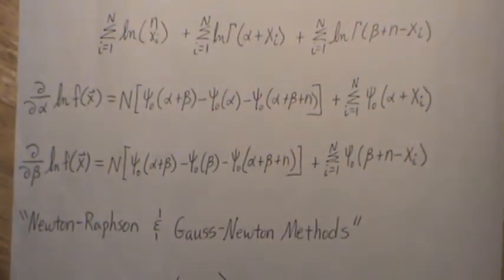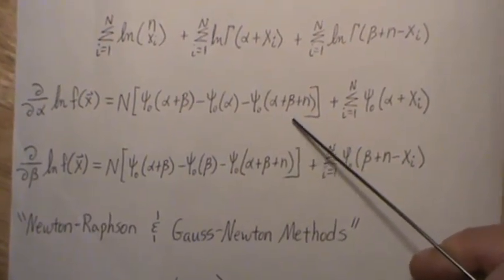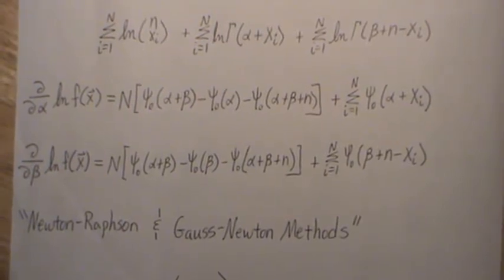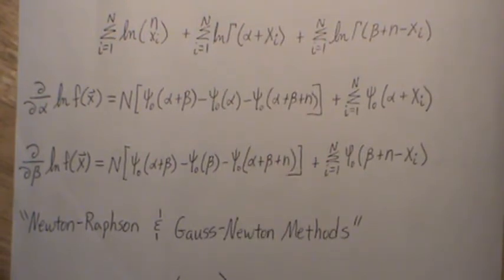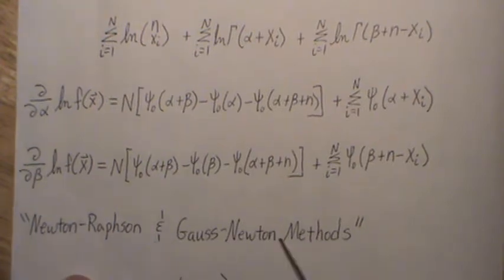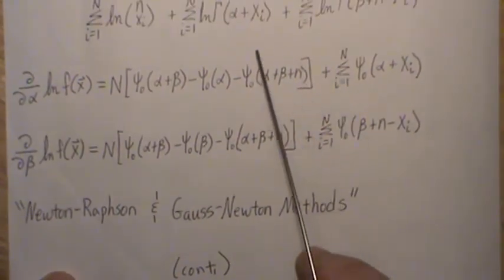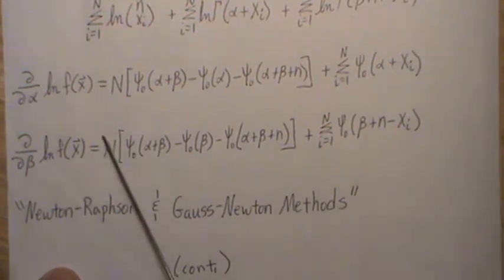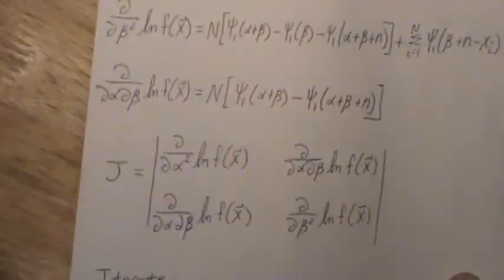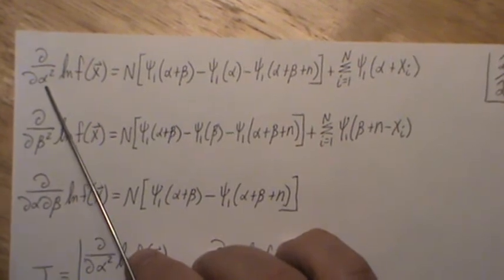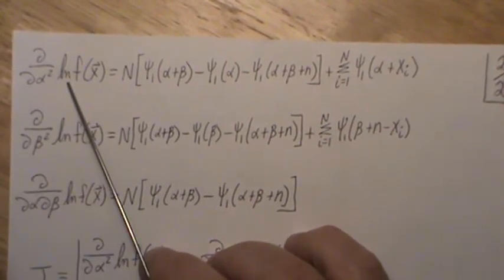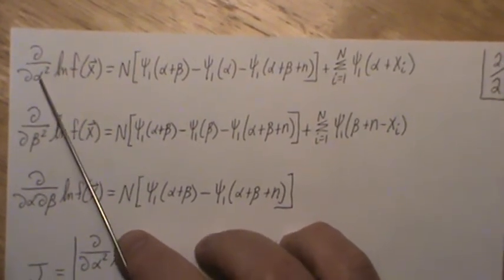These can be solved numerically for certain specific values of alpha and beta, but in general there's no closed-form solution, so you have to use numerical methods. I have a video called 'Newton-Raphson and Gauss-Newton Methods' — a two-part video giving the intuitive feel and then the more mathematical description. Notice these are the equations we want to set to zero, so we take second partial derivatives with respect to alpha of the log likelihood.